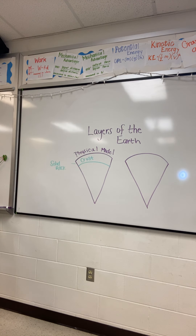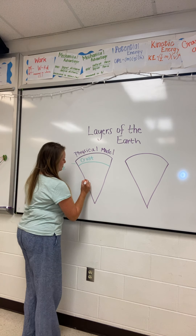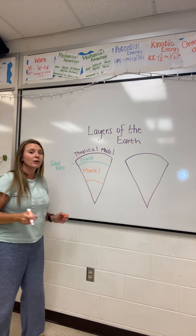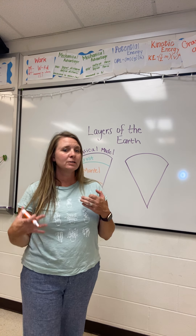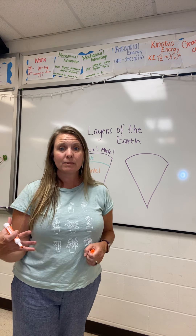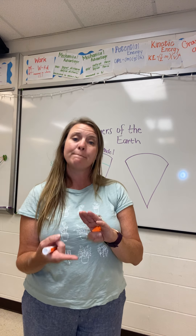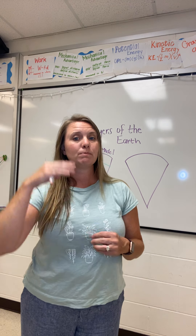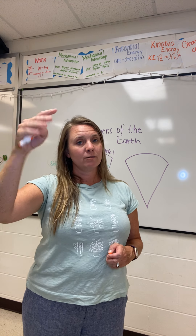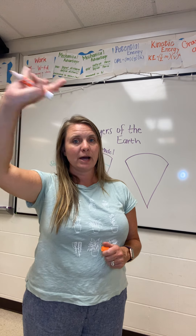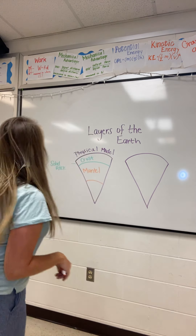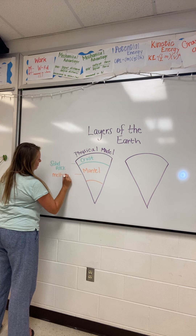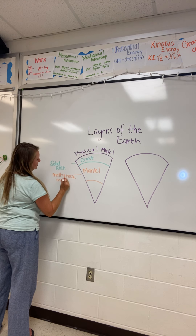The layer right below the crust is going to be the mantle. In our physical model, the mantle is an area where there is rock that is melted — some that is magma. This brings up a good point: magma is below the earth's surface; it's still lava, it just hasn't erupted yet. Lava is what it's called once it reaches the surface. So the mantle is like melty rock, and it moves.